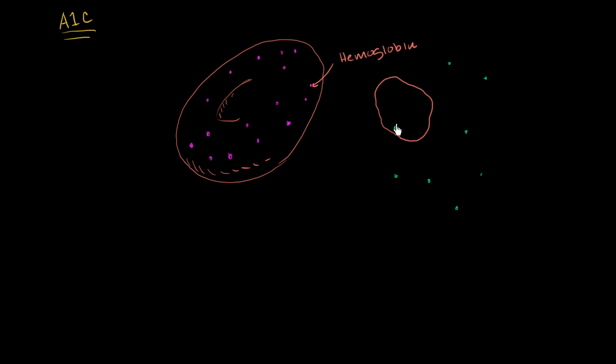This hemoglobin with a glucose bound to it is called glycated hemoglobin. I wrote glycated in green because I'm using green for the glucose. Another name for glycated hemoglobin, or hemoglobin that has some glucose bound to it, is hemoglobin A1C.